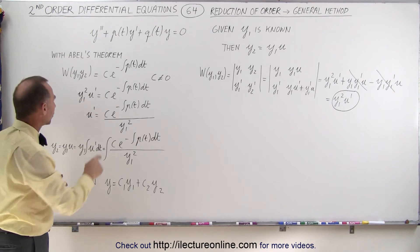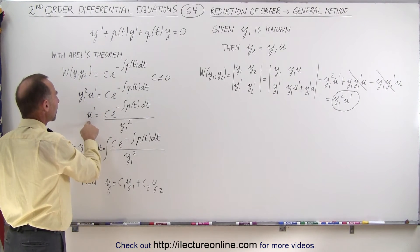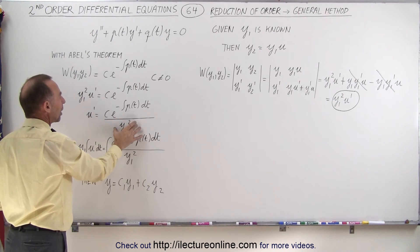Since we're looking for u, we're going to divide both sides by y1 squared, so u prime equals this divided by y1 squared.